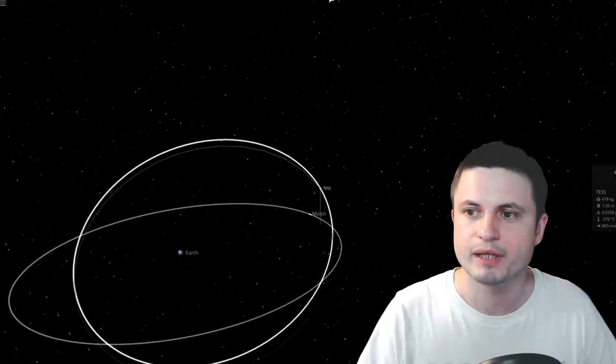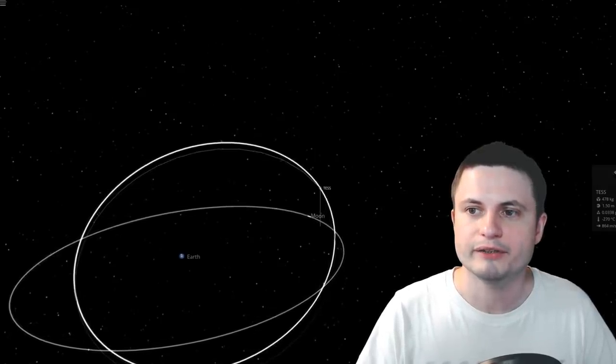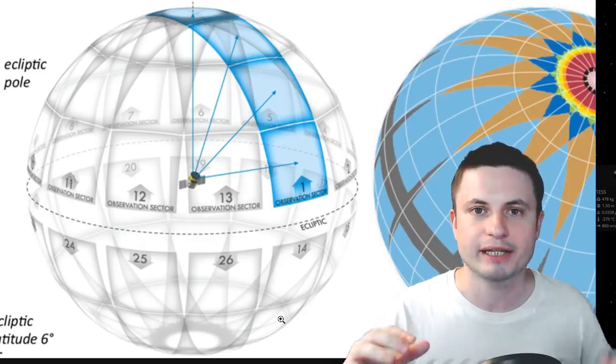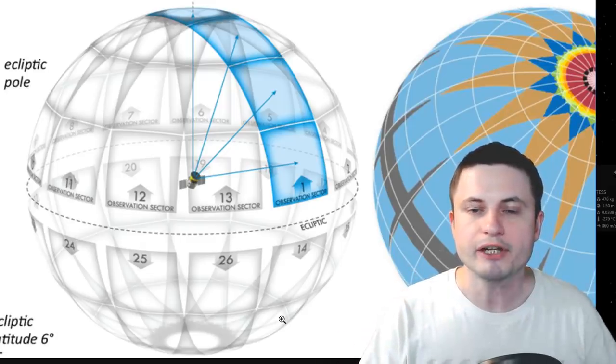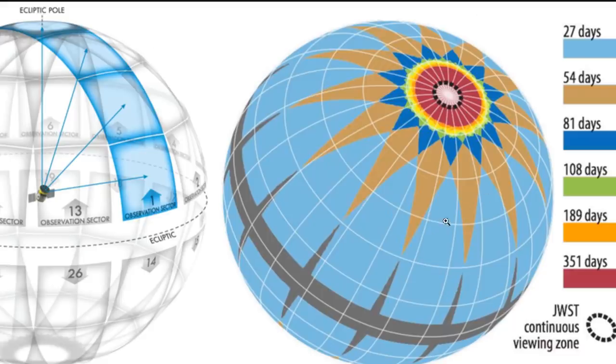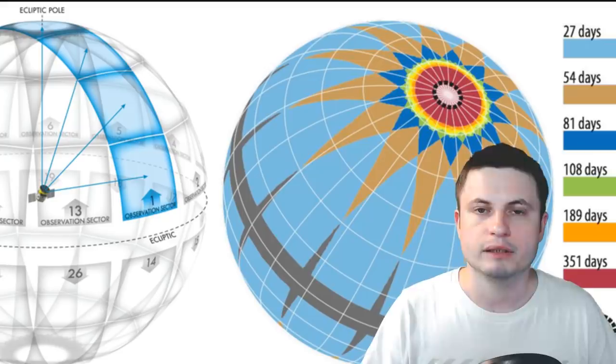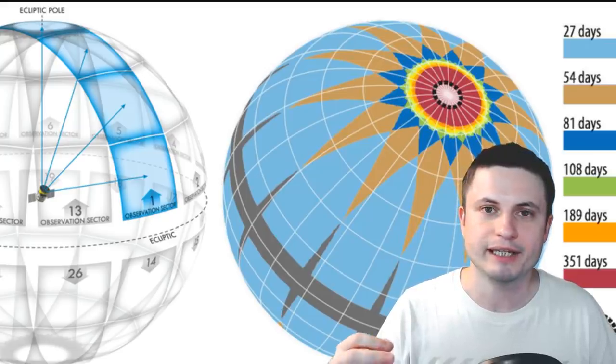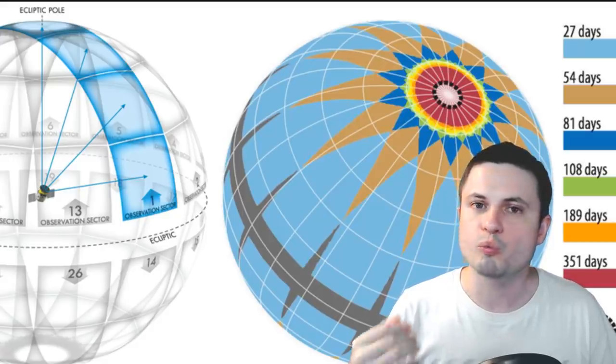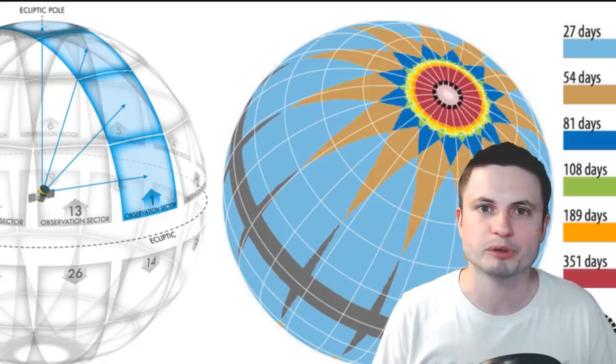Every single time it does that, it acquires new data from this imaginary sphere that you see here and it divides the night sky into these quadrants. Eventually it's going to cover all of these quadrants, forming an image that sort of looks like this. There will be some gaps here and there, but it will be able to cover pretty much most of the night skies and collect data from the entire night skies that we see. This is way more advanced than what Kepler was able to do.